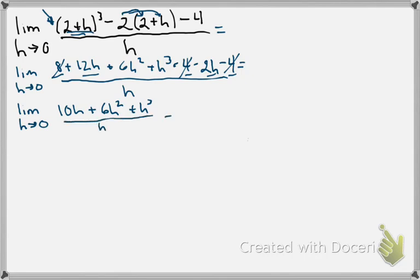Now, at this point, if I were to try and plug in 0 for h, I would still get 0 over 0 or an indeterminate form. So, I have to do a little bit more work. As we saw in some of those videos, sometimes factoring can help us here.